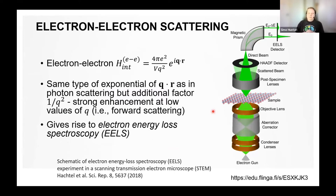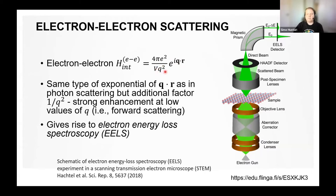For electrons, the interaction between the probe electrons and electrons in the material is described by the electron-electron Hamiltonian. It has the same type of exponential of q·r, which can be brought into the dipole limit by approximating it as just q·r. But importantly, it also has in the denominator an additional factor of q-squared. This means that compared to photon-electron interaction, the electron-electron scattering has a strong enhancement at very low values of q — forward scattering. This is the interaction that gives rise to electron energy loss spectroscopy.